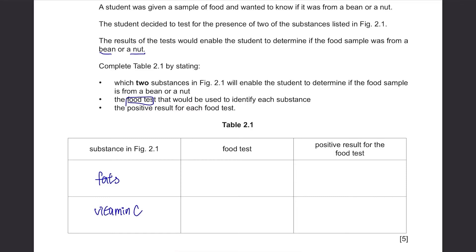The food test that would be used to identify each substance. Yes, you are supposed to know all the food tests. So, for fats, we have to use the emulsion test. And for vitamin C, we have to use the DCPIP test. If you haven't heard about these tests before, please go ahead and google it or find it on YouTube and watch it. You have to know what these are and their procedures and results. Next, the positive result for each food test. For the emulsion test, if the fat is present, it will turn cloudy or white. Then for the DCPIP test, from blue, it's gonna change to colorless.